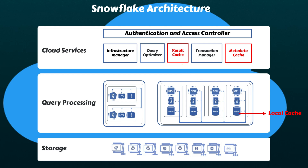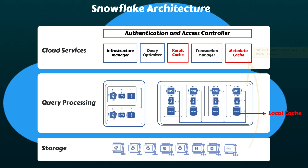Snowflake's caching strategy extends further with a metadata cache stored in the cloud services layer. This cache can directly answer specific queries without spinning up a virtual warehouse. A good example is finding the maximum value of a particular column, which can be retrieved directly from the metadata cache. This comprehensive caching system at various levels is a key factor contributing to Snowflake's superior performance compared to other similar data platforms.